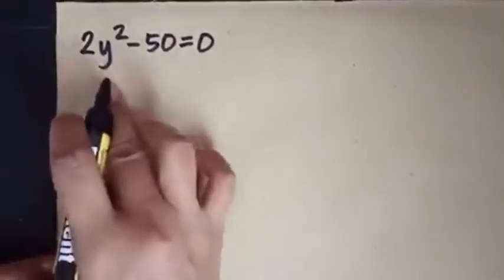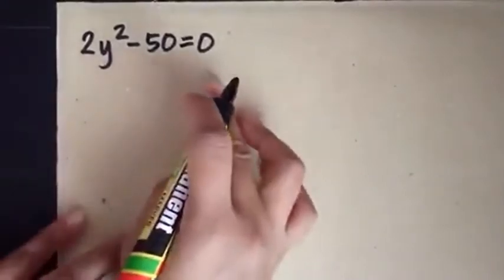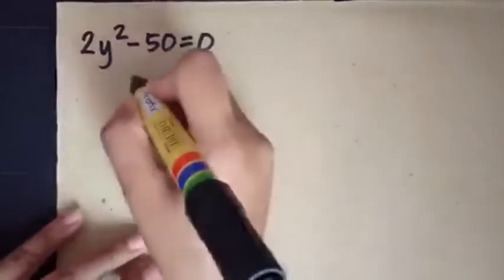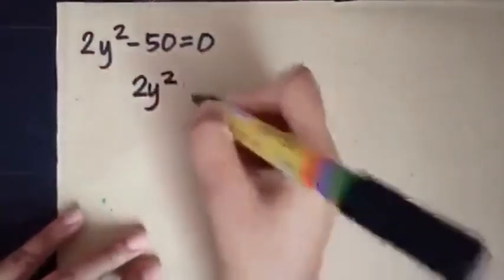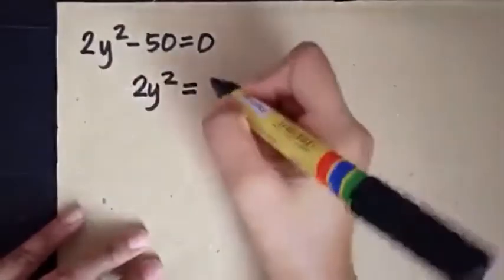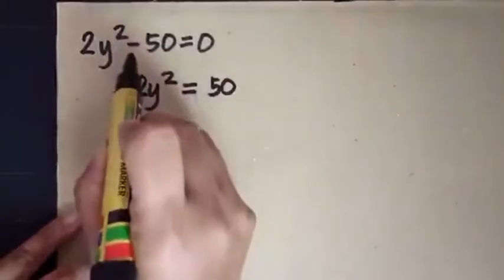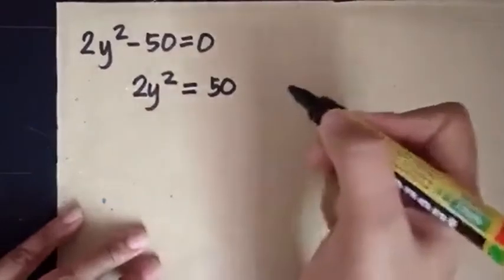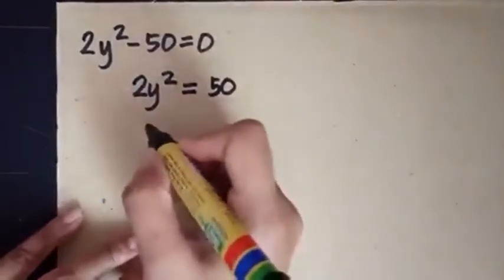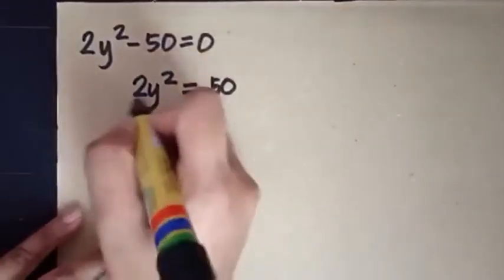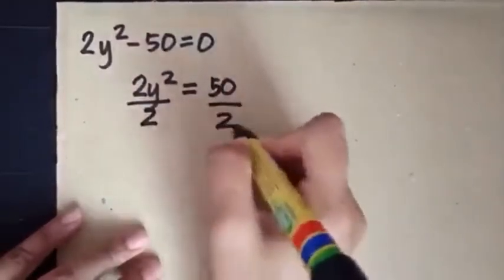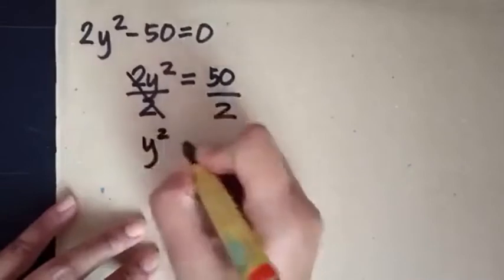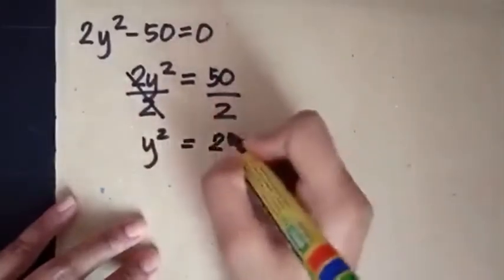Now let us try 2y squared minus 50 equals 0. We transpose the constant term to the other side, bringing down 2y squared, so 2y squared equals positive 50. Next, to make the value of a equal to 1, we divide both sides by 2. Therefore, y squared equals 50 divided by 2, which is 25.